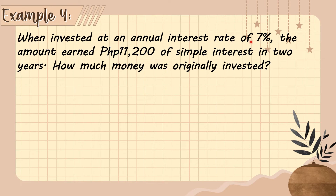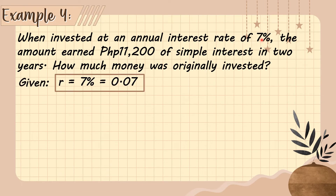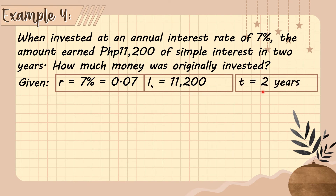Example number four: When invested at an annual interest rate of 7 percent, an amount earned 11,200 pesos of simple interest in two years. How much money was originally invested? The given: rate r = 7% or 0.07, simple interest = 11,200, and time = two years. We need to find the principal.